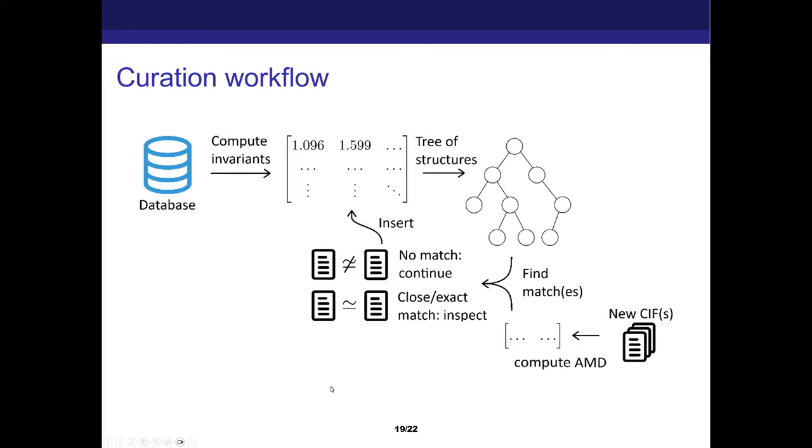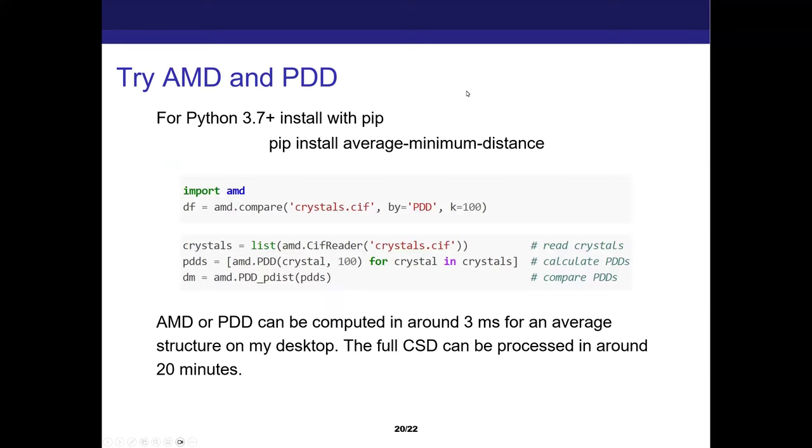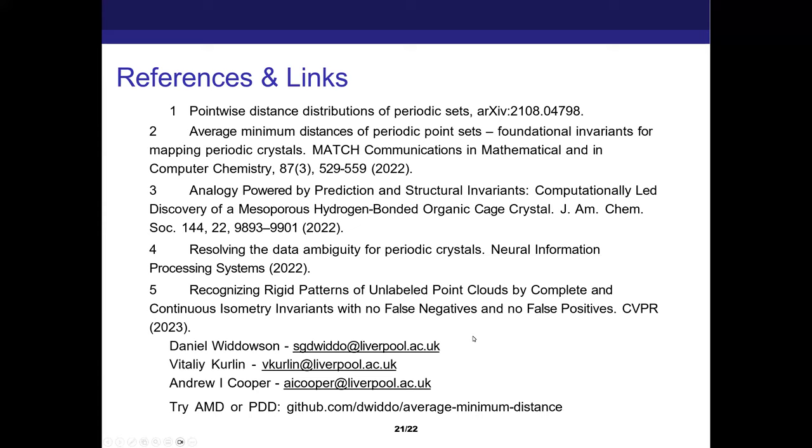I guess I'll skip over this slide because I've overrun by quite a lot by this point, but it's a rough layout of how you'd use this idea in the curation process to check that there's no geometric duplicates already in your database when you add a new CIF. If you want to try AMD or PDD, the package is installable with pip and hopefully easy to use and well-documented. It doesn't take very long. So if you have some crystals laying around, then give it a try. And then that's the last slide with references.